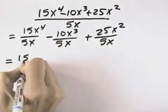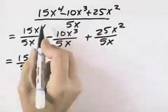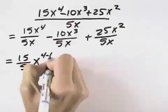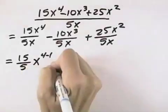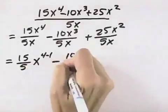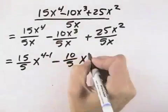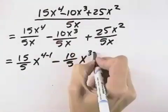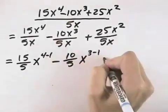What that allows us to look at is 15 divided by 5, but with the variable x, we've got the fourth power in the numerator minus the first power of the denominator. Then minus 10 divided by 5, and again with the x, the exponent would be a 3 in the numerator minus the 1 of the denominator.